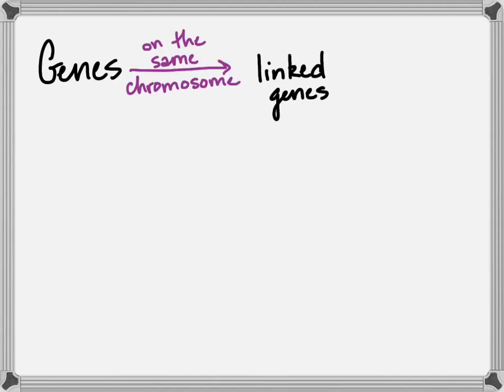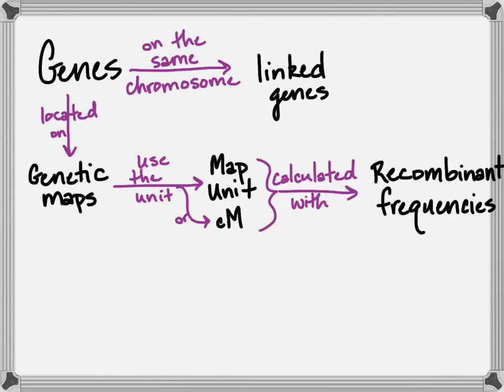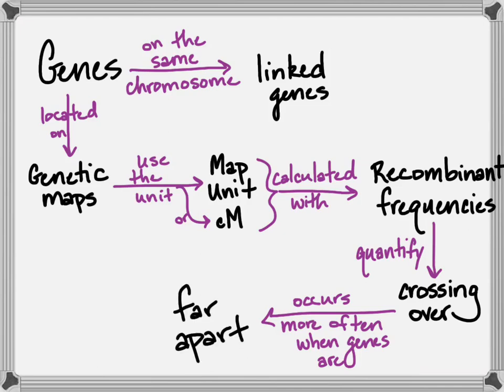So, a quick recap here. Genes on a chromosome are considered to be linked genes. Genes are mapped onto genetic maps. We use units called centimorgans, or map units. Genes are calculated using recombinant frequencies, and that, again, helps us to quantify how often recombination or crossing over occurs. The more crossing over you have, that means the genes are further apart. So, the more far apart they are, the more often crossing over can occur, the larger your recombinant frequency, the larger your map unit, the further apart the genes are on the map.